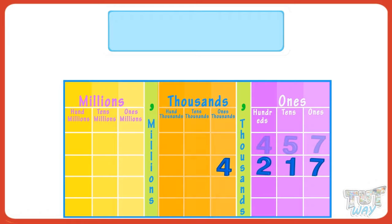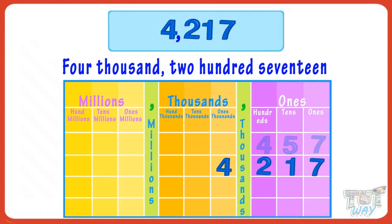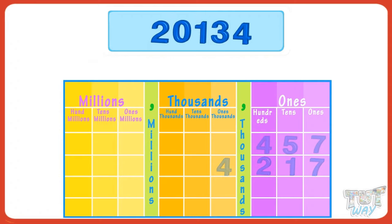Now let's read the number. Read the digits separately from all periods. Four is in the thousands period, so read it as four thousands and place a comma after four. Now two, one, seven are in the ones period — read them as 217. So our number is written as 4,217 and read as four thousand two hundred and seventeen.